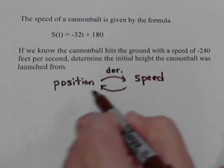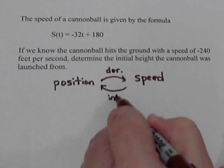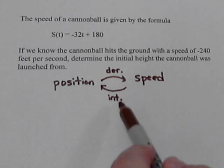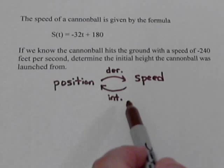So if we start with the speed, in order to go back to the position, we do an integral. That's the abbreviation for derivatives and integrals. That's how we go between the two.